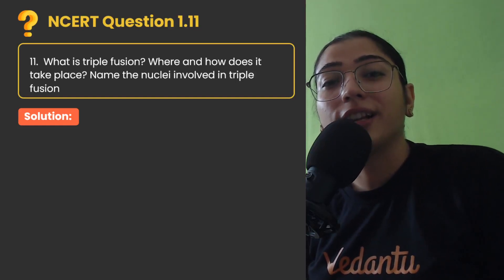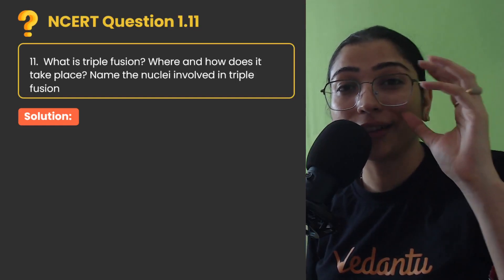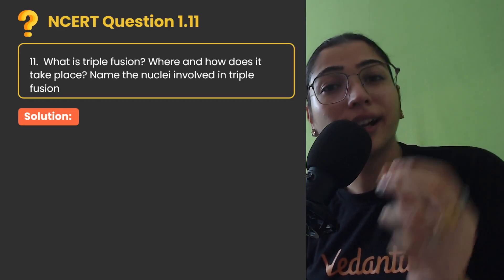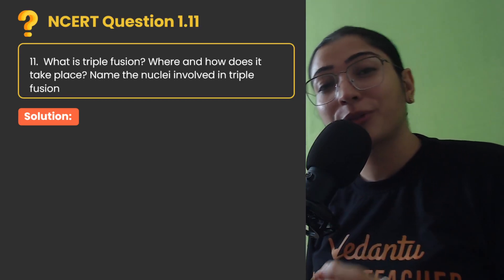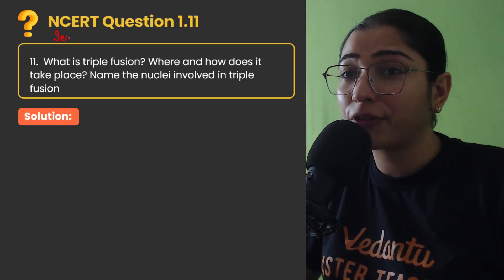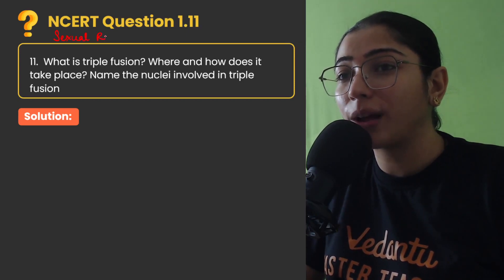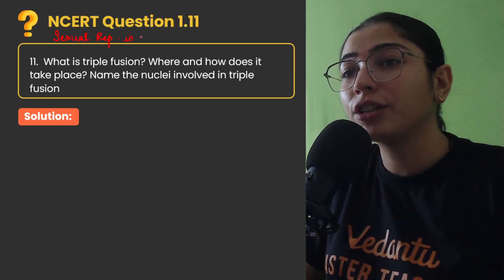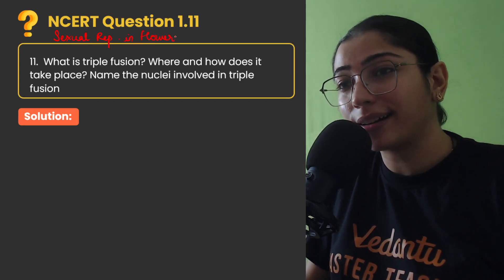Hello students, welcome to the channel Vedantu NCERT Solutions class 11th and 12th where we discuss the NCERT back exercises of physics, chemistry and biology on one single platform. Today we are discussing a chapter from biology, sexual reproduction in flowering plants, that is your first chapter from class 12th NCERT book.